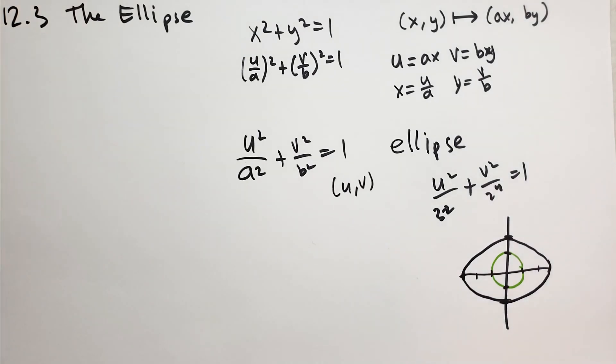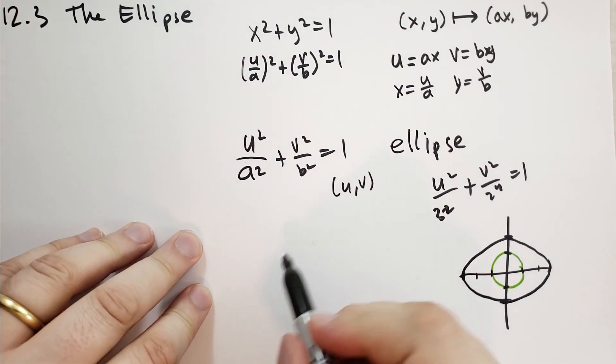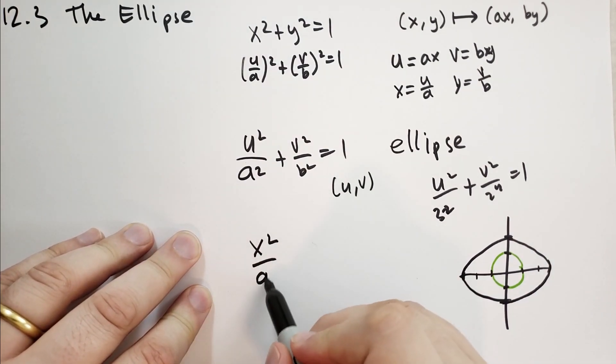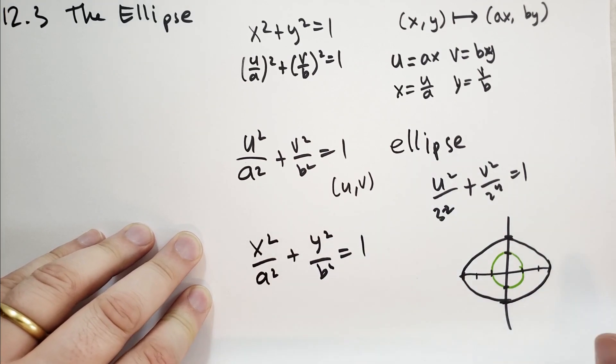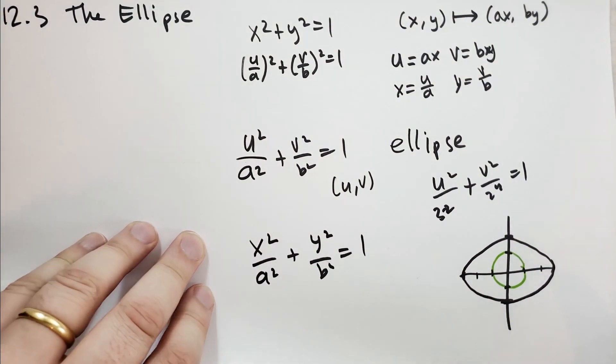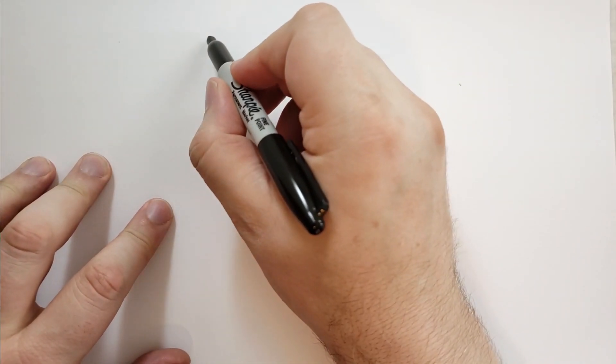We can also translate the ellipse the same way we did everything else. So the general equation for an ellipse is x squared over a squared plus y squared over b squared is equal to 1. If we were to try to translate it, you can imagine how that works.